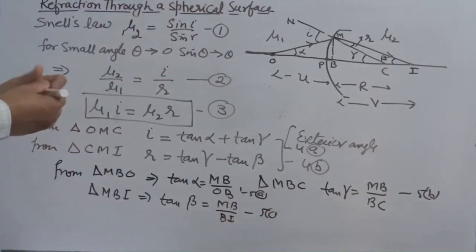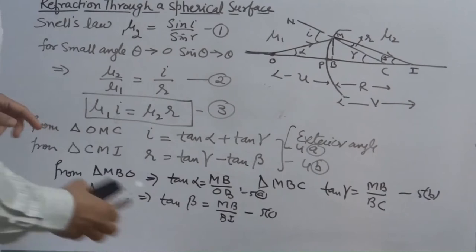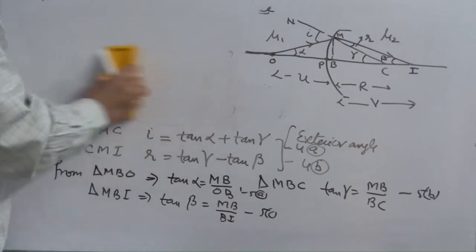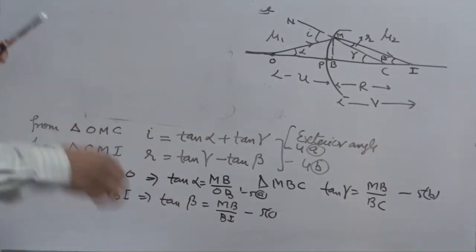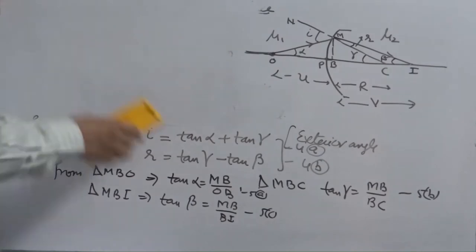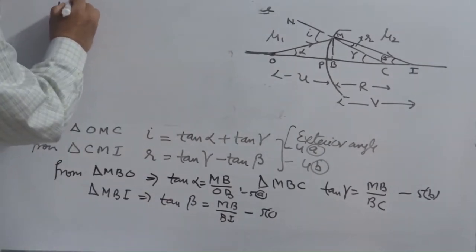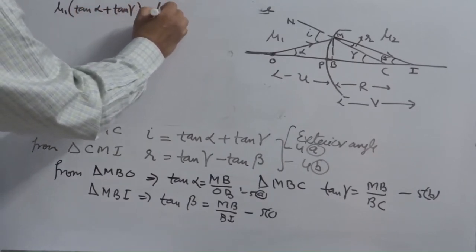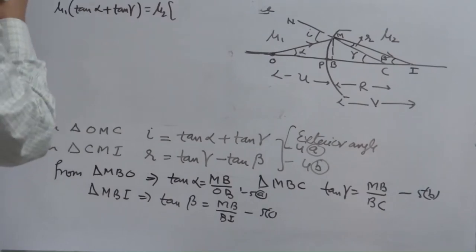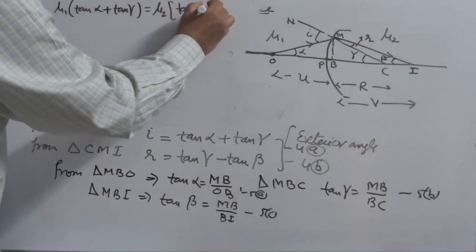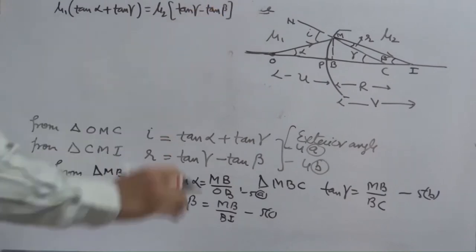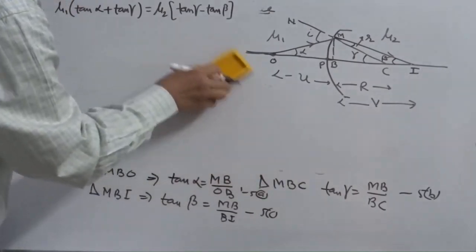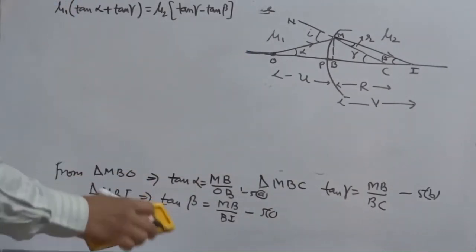Now, put the values of 4A and 4B in equation 3. What was equation 3? Mu 1. You will have mu 1, I means tan alpha plus tan gamma is equal to mu 2 and then tan gamma minus tan beta. Now, put the values of these values also here. Tan alpha, tan beta, tan gamma.